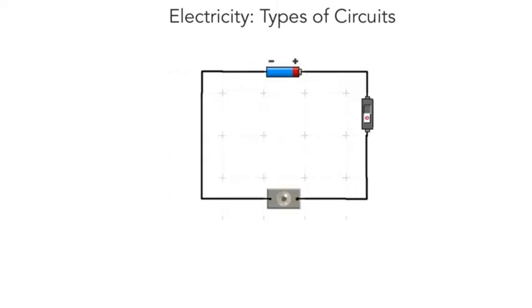So here we can see our open circuit, and because we have our switch in the open position, we have, as a result, no light. So again, this is an example of an open circuit.